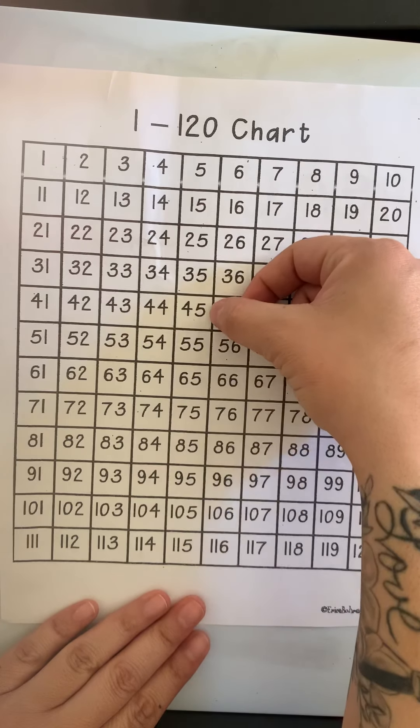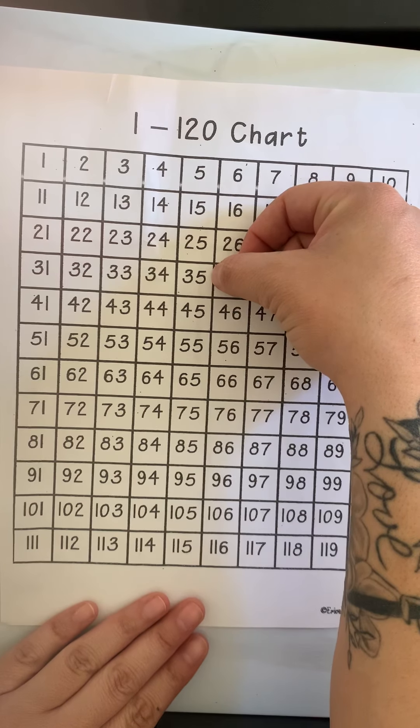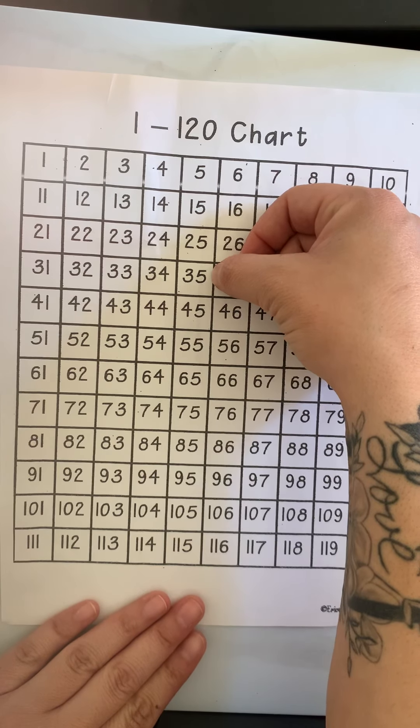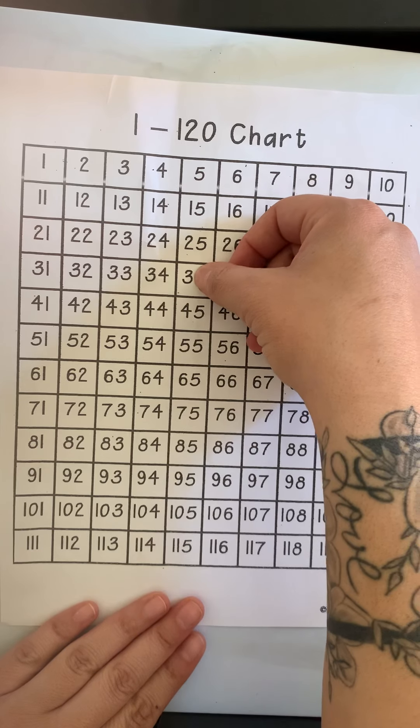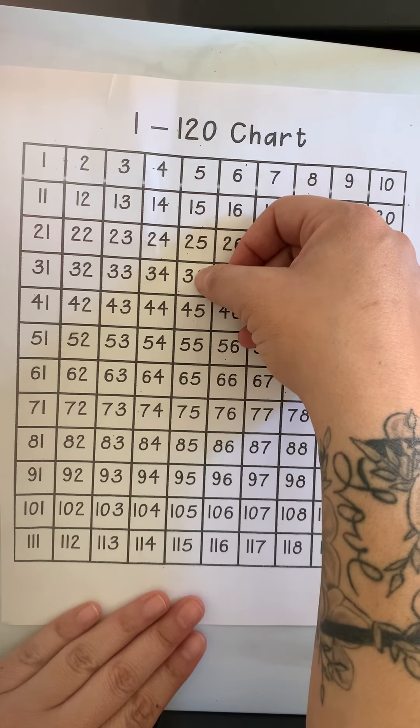If you look at the pattern, instead of counting back 10 spaces, you can slide your finger up. And that number is smaller and it is 10 less. If you look in the tens place, it went from four tens to three tens.